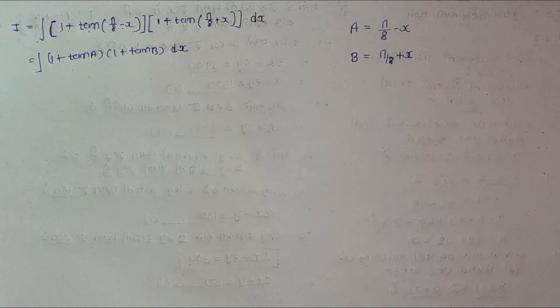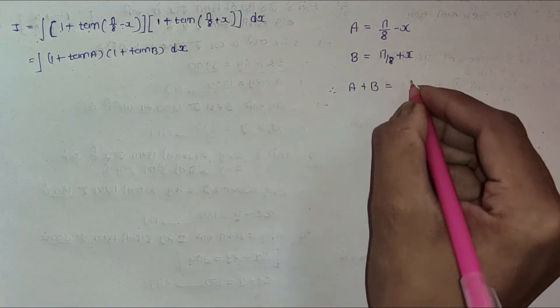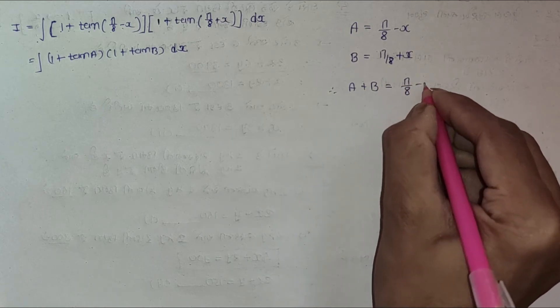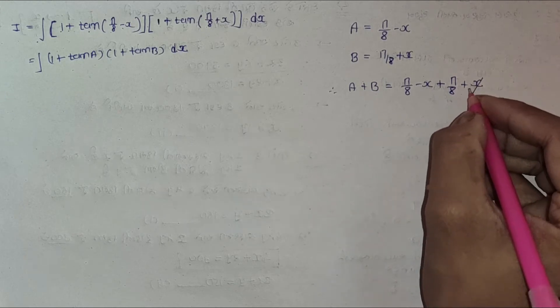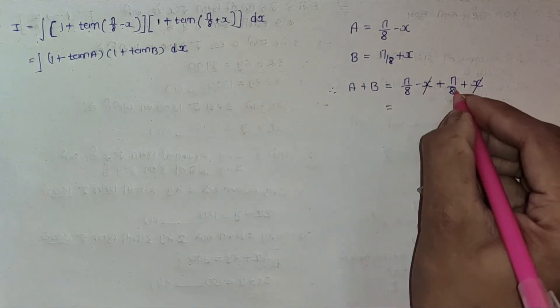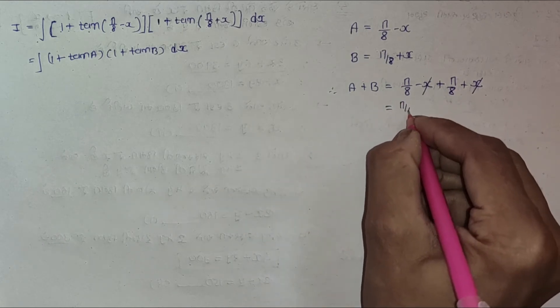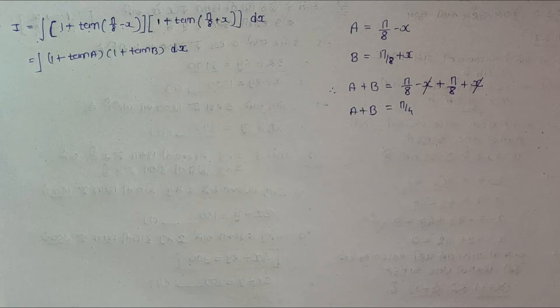Easy. Let's observe here: angle A + angle B equals π/8 - x + π/8 + x. Now the x terms cancel, and π/8 + π/8 is π/4. So A + B equals π/4.